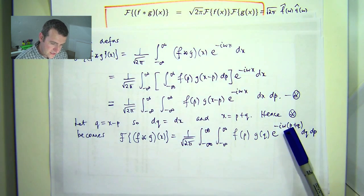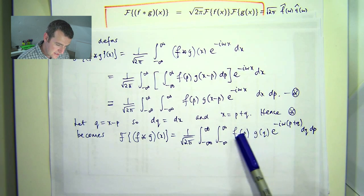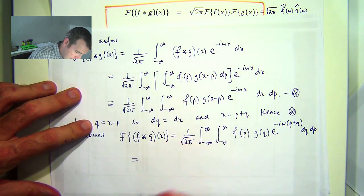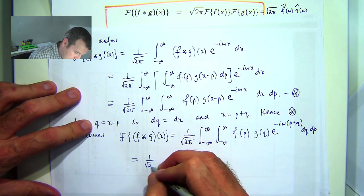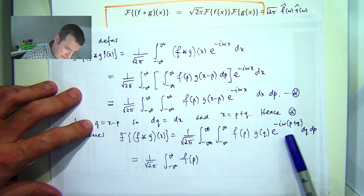Okay, so now what? Well, I can distribute the exponent out here. Now this has, again, this has nothing to do with q, so I can do the following.